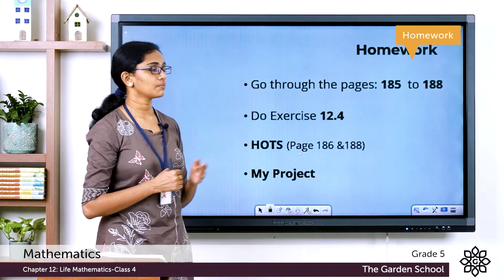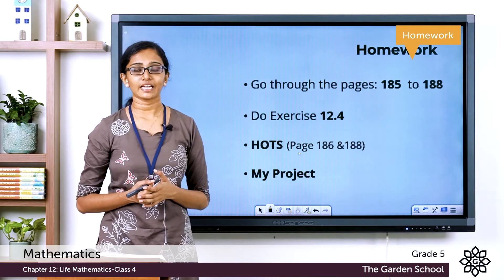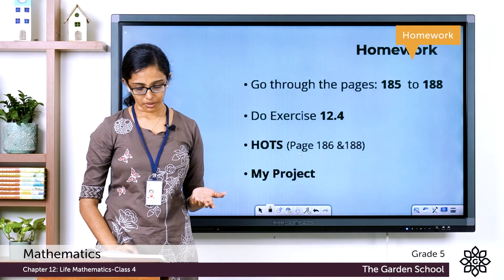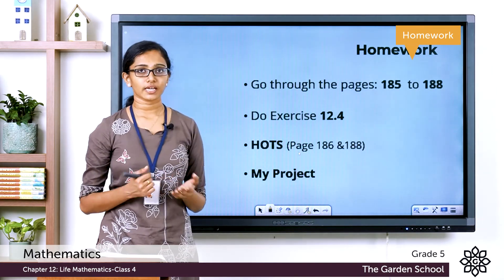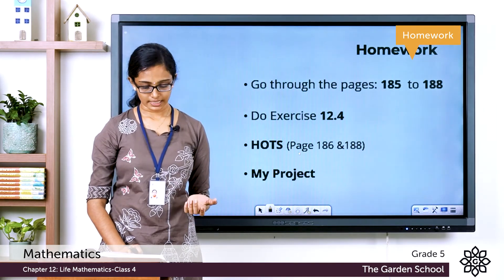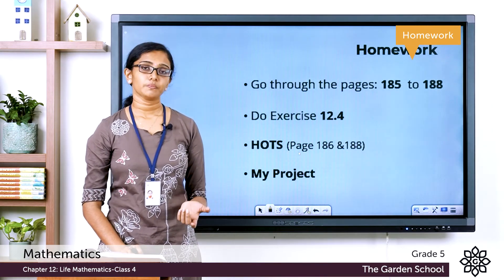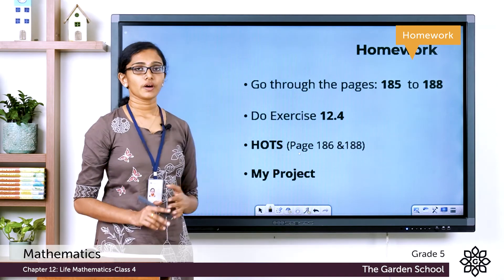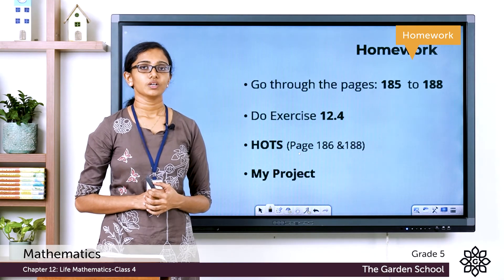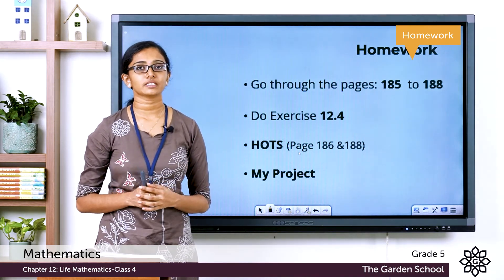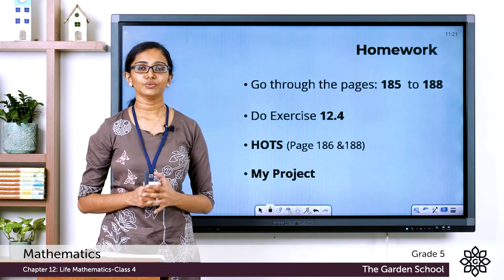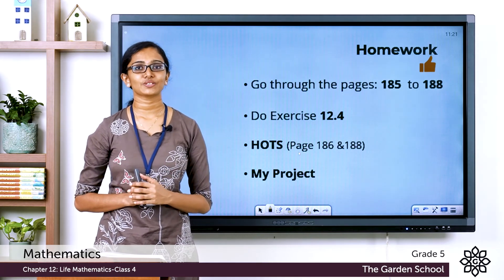You have to go through topics from page numbers 185 to 188 of your textbook. Complete exercise 12.4 on page 186, and on the same page there is a higher order thinking skills question. There is also one more higher order thinking skills question from page 188, and a 'My Project' activity on page 188. Finish all activities, take a picture, and send it to us. I hope the concept we learned today is clear. We'll see you in the next class with a new topic. Bye.